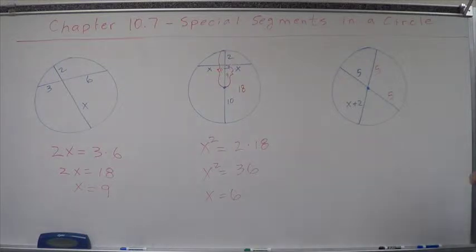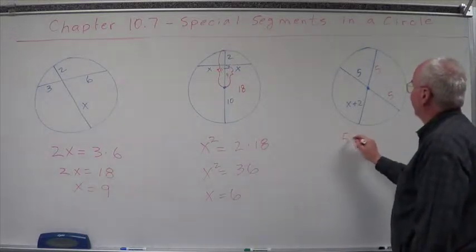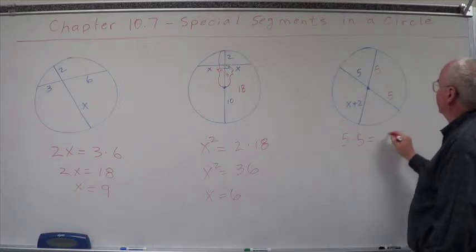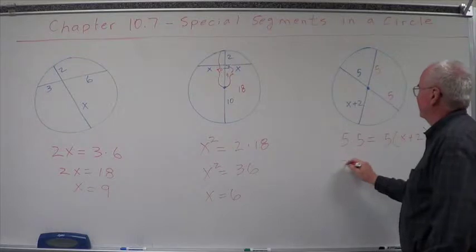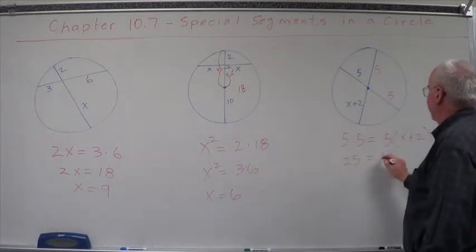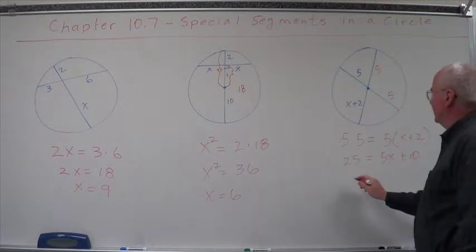Let's see if you can figure out a little short way of doing this. We're going to end up with 5 times 5 equals 5 times x plus 2. So 25 equals 5x plus 10. We're going to subtract the 10.